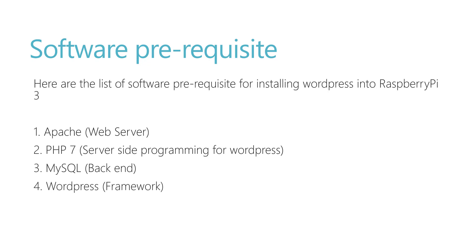MySQL is very important to have available. Finally, the WordPress framework itself — we download it from their website using wget, unzip it, and put it into the www folder. These are the four most important prerequisites before making a Raspberry Pi 3 into a WordPress web server.